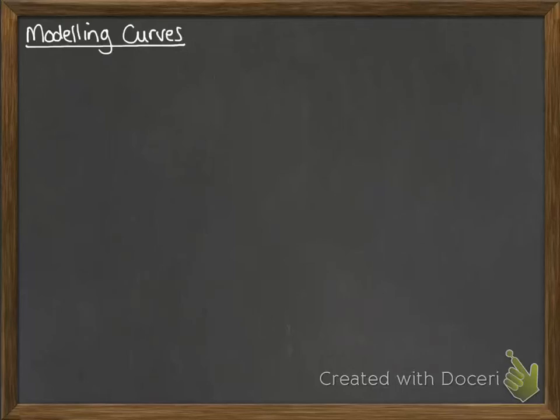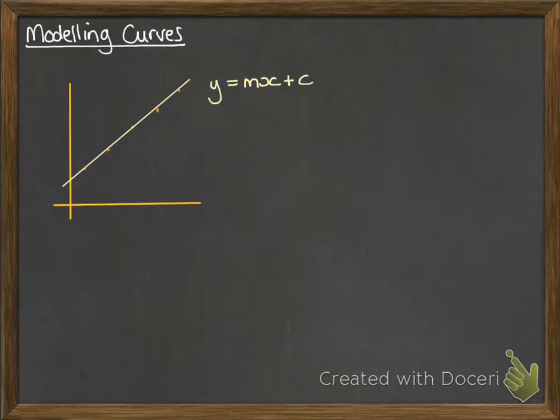This lesson looks at how we can use logarithms and exponentials to model data and get equations for them. If you had some data that looked like a straight line, you would find the equation of that line to fit it, and that would be of the form y equals mx plus c.